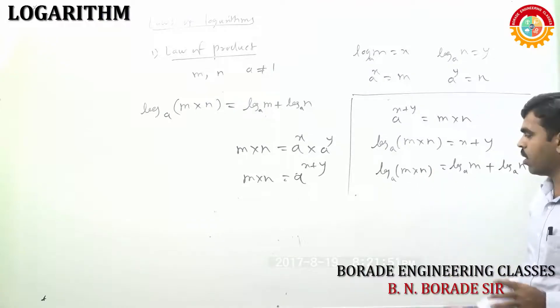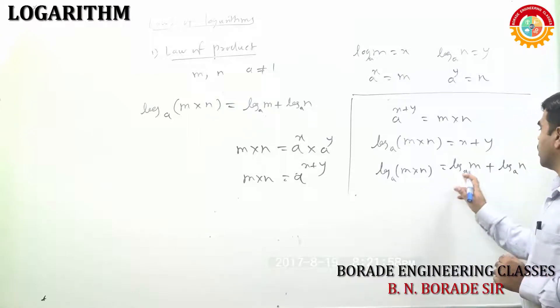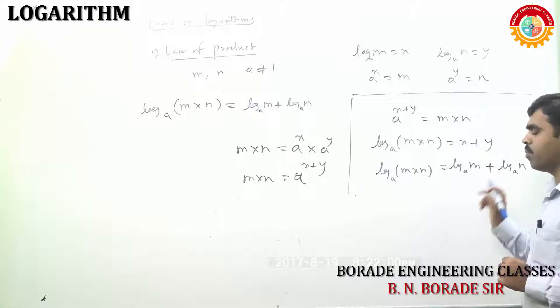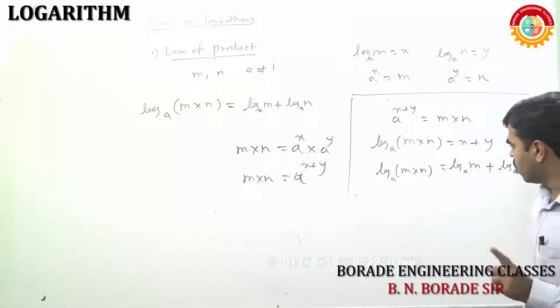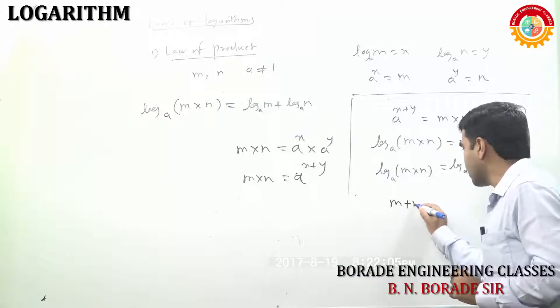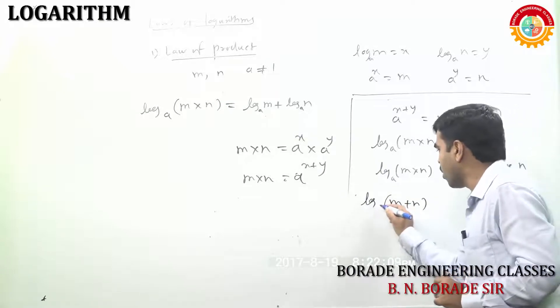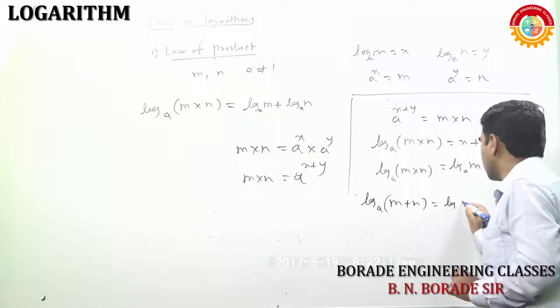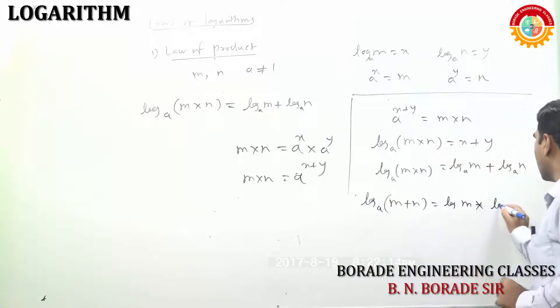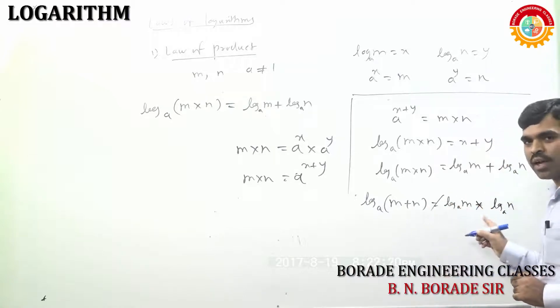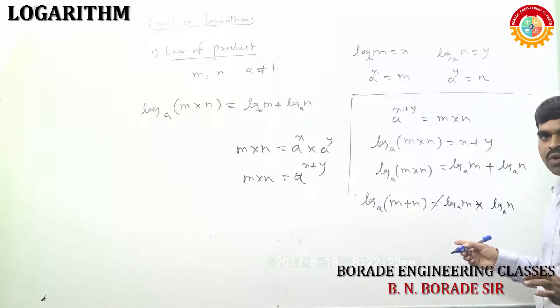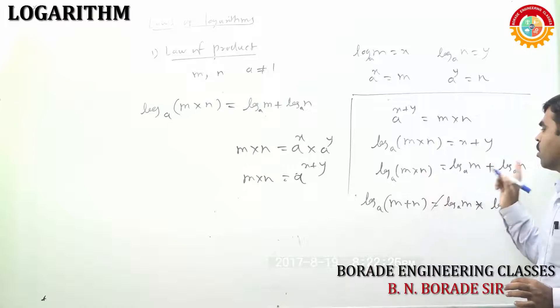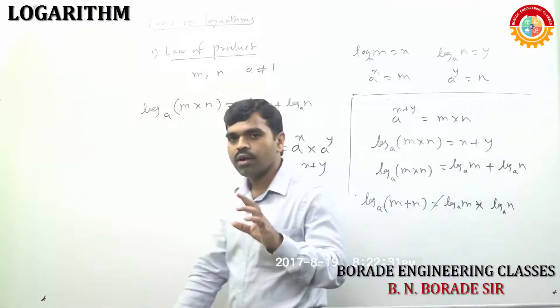If there is a multiplication of number and if we apply log on that multiplication for any base, suppose it is A, then there is addition of two log of that numbers. But note down one thing: M plus N is there and if we apply log on that addition, this is never equal to log of M plus log of N to the base A. We can apply log only on multiplication. And then there is addition. Haa zhala aapala law of product.